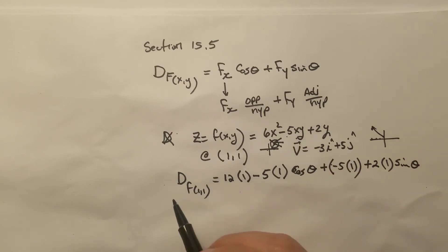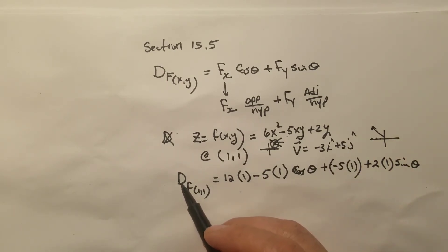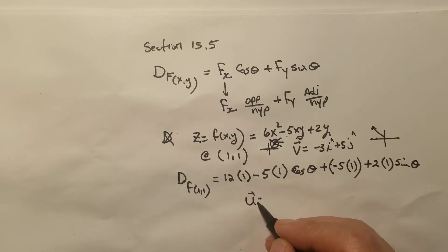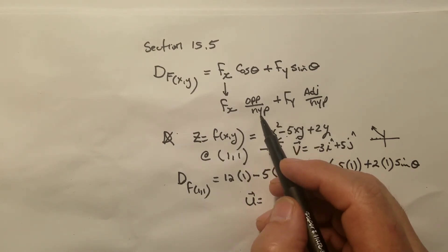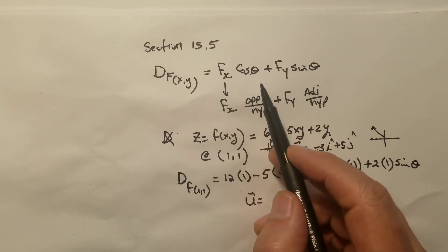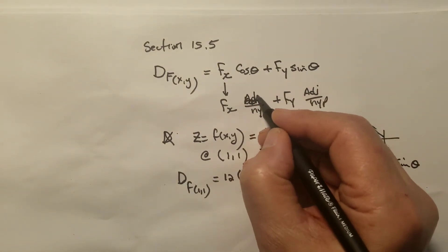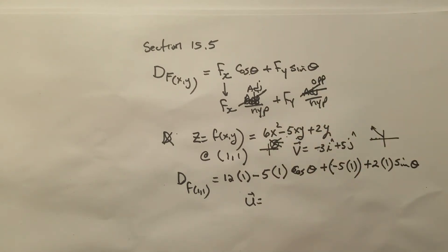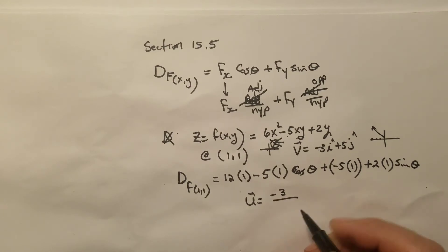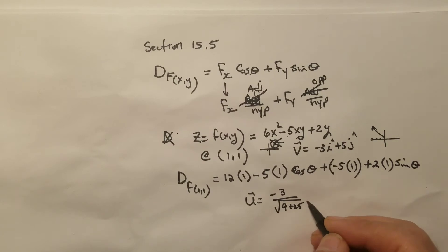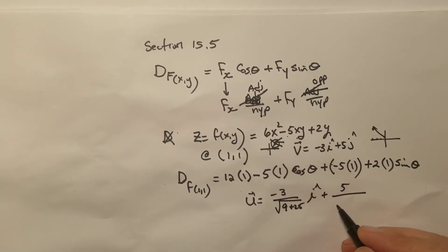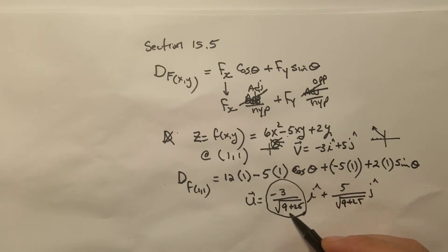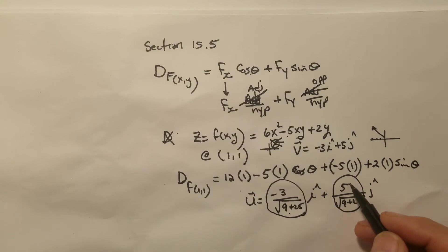I need to make sure that vector is a unit vector, because if it's not, its magnitude will affect the value of the directional derivative. This one is not a unit vector, so I need to divide each component by the magnitude. I should also note a correction: cosine is adjacent over hypotenuse, and sine is opposite over hypotenuse. So the unit vector u = (−3/√34)i + (5/√34)j, where cosine θ = −3/√34 and sine θ = 5/√34.